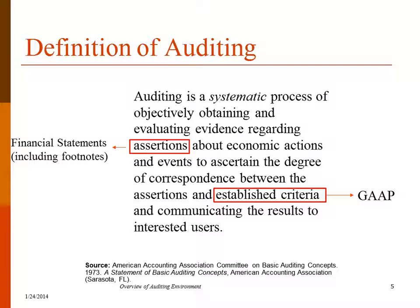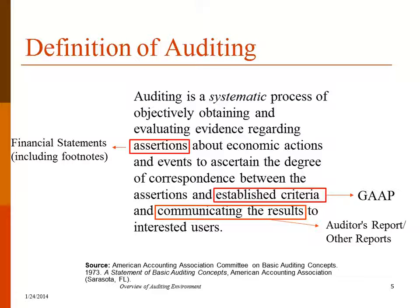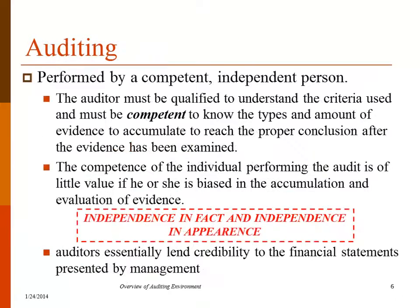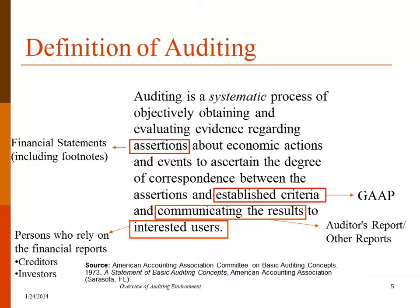The assertions and the established criteria, which in this case is GAAP — generally accepted accounting principles. If it was an international company doing business in another country, they might report under IFRS, International Financial Reporting Standards. Here in the U.S., we're still using GAAP. So those established criteria, and then communicating the results to interested users. The auditor's report, which is the output of the audit process.